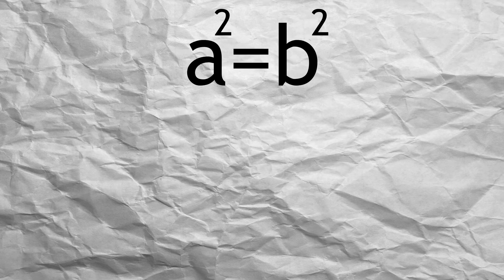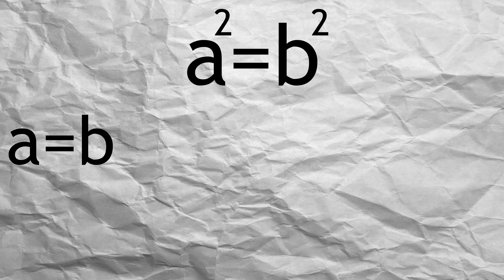The fallacy is in the last but one line, where the square root of both sides is taken, only implies a squared equals b squared, if A and B have the same sign.